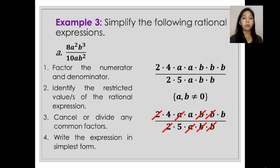So multiply all the factors left, and we have in the numerator 4 times a times b, and in the denominator we have 5. So the simplest form of that would be 4ab over 5.